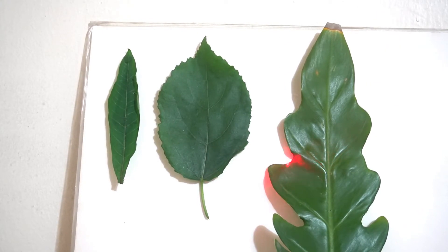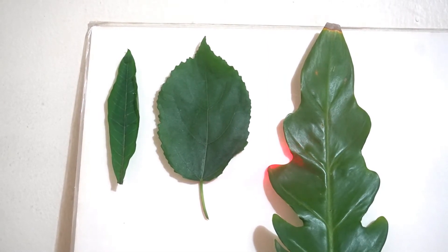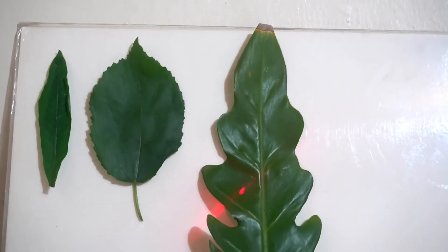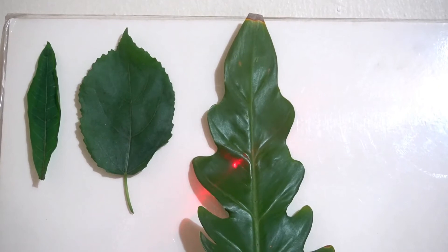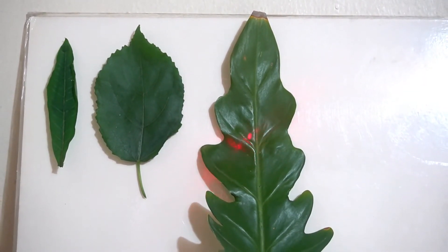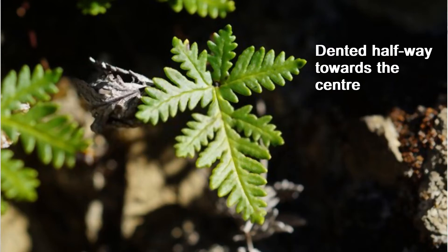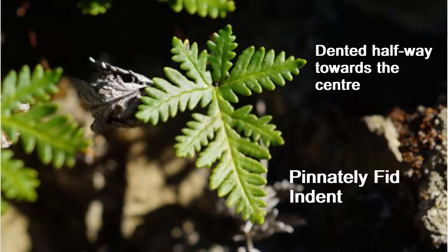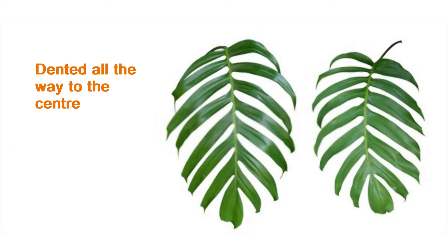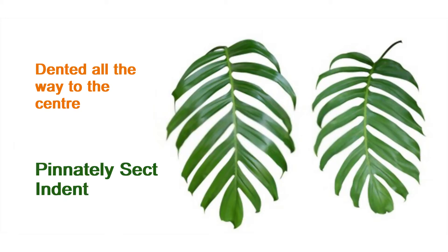But then there are other leaves. If you look at the margin, you find that some are actually dented all the way to almost half of the leaf towards the center — that has a name, and you can find that out. When it is dented towards the center halfway, we call that pinnately partite indent. Now when it is dented all the way to the center, that is called pinnately partite sect — it is dented all the way to the center.